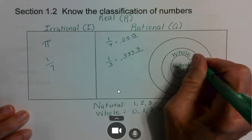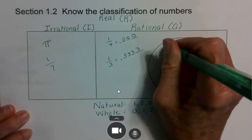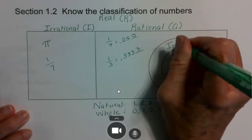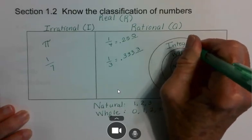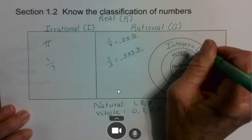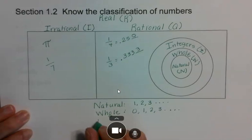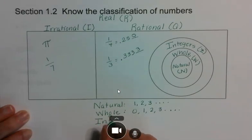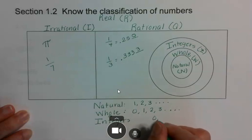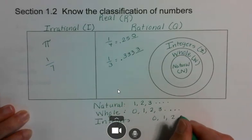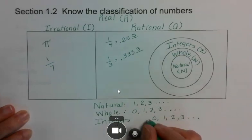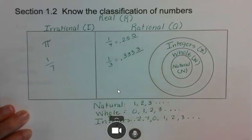The abbreviation for whole numbers is W. Outside of those, you have integers — abbreviation Z — which are basically positive and negative whole numbers. So it goes in both directions: 0, 1, 2, 3, and so on, and also continuing in the negative direction. So integers include your negative numbers.